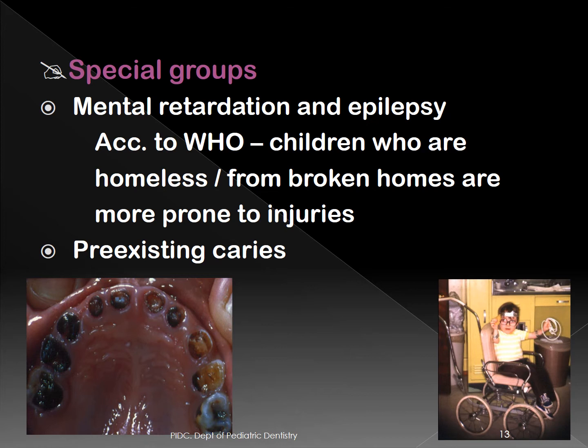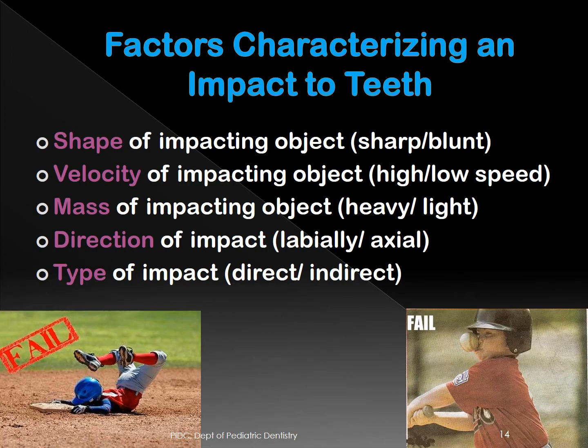Special groups include children with mental retardation and epilepsy, children from broken homes or who are homeless — they are more prone to traumatic injuries. Pre-existing caries also weakens the crown so that any slight force can fracture it away.